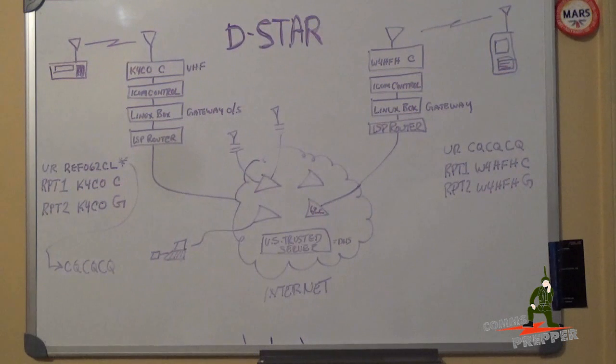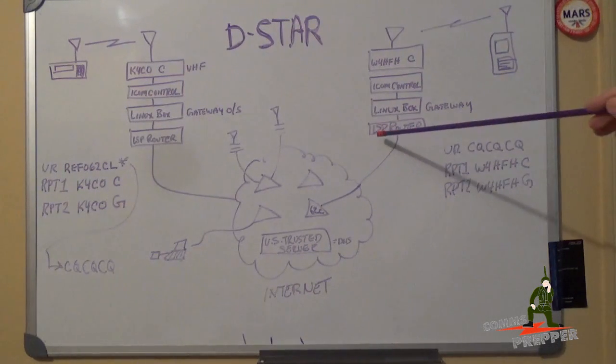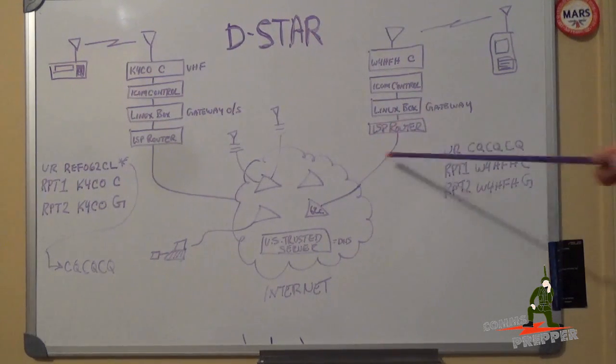Again, this is a completely digital system and it requires some routing to get between the two stations. But for a brief overview, you've got a repeater system here in Virginia, a repeater system here in Kentucky. The systems are comprised of, of course, the RF components. In this case, I have C shown for VHF because that was the contact. You can also see B for UHF. They connect to an ICOM controller, repeater controller, and then a Linux box running a gateway operating system. There are several different OSs out there, so we're not going to get into the specifics of that, which, of course, connects to an Internet service provider router, which connects to the Internet.